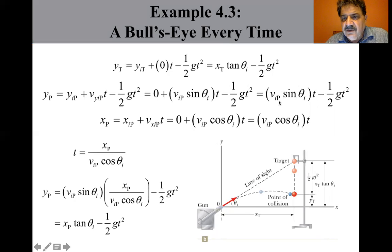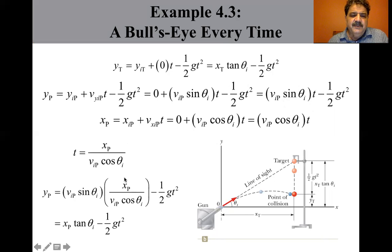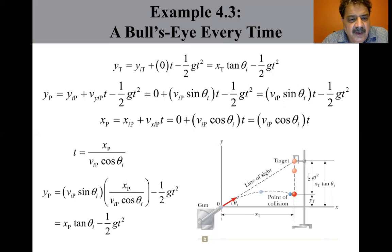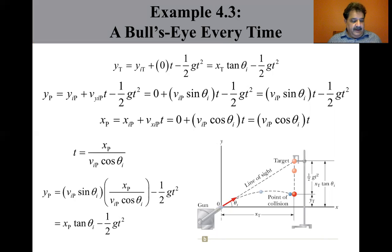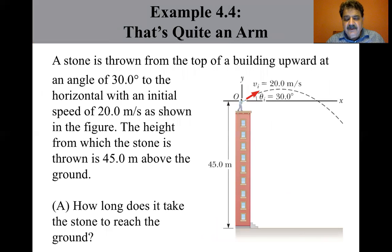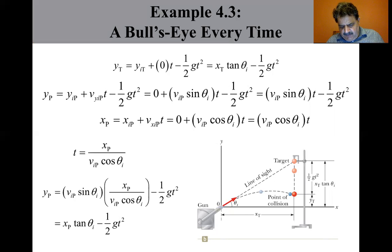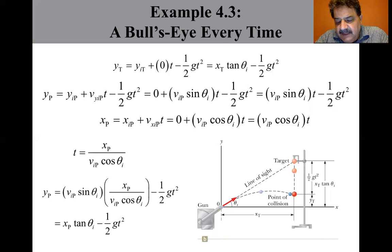We substitute this expression for time into the Y-coordinate equation of the projectile, replacing T with X-P over V-I-P cosine theta, giving: V-I-P sine theta-I times (X-P over V-I-P cosine theta) minus one-half G-T-squared. When we compare the equations for Y-T and Y-P, we see that when the X-coordinates of the projectile and target are the same — when X-T equals X-P — their Y-coordinates are also the same, and the collision results.